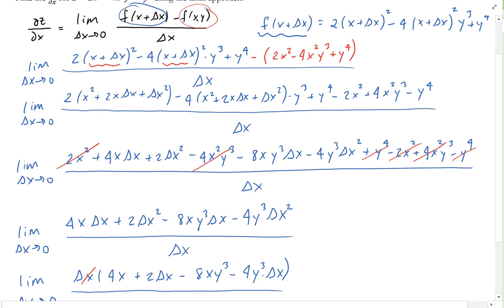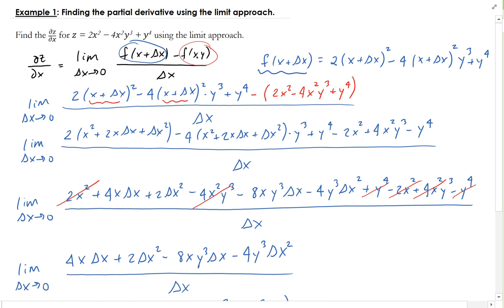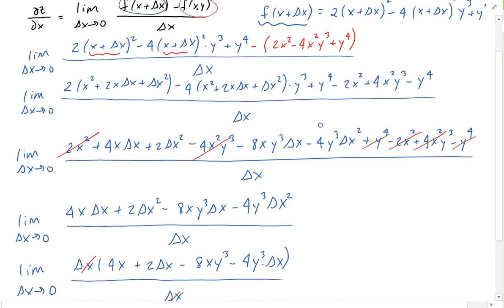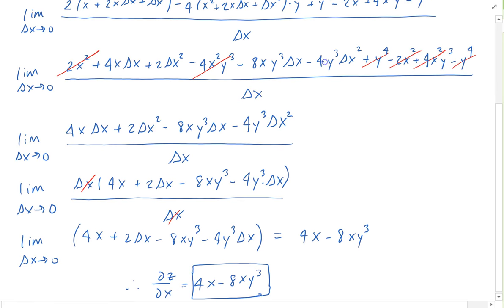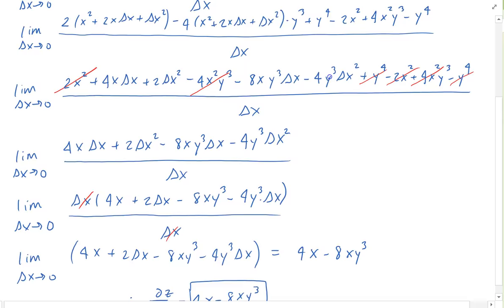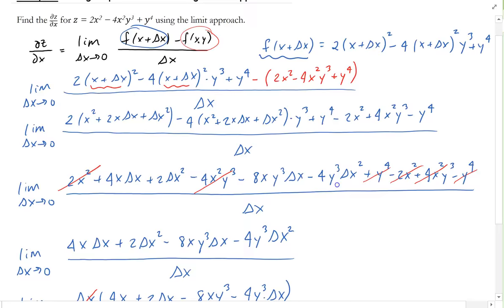So this was taking the partial z with respect to x using the limit definition, and we end up getting 4x minus 8x times y³.